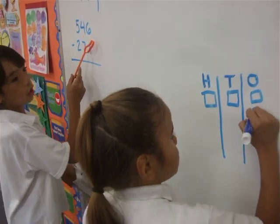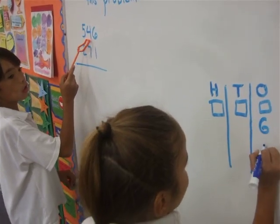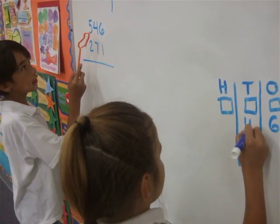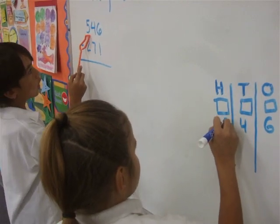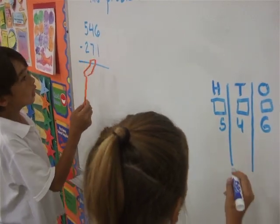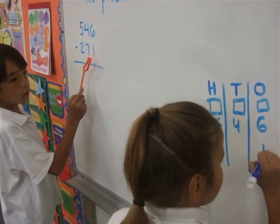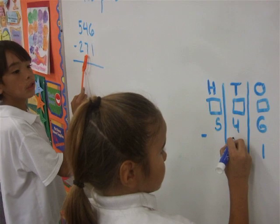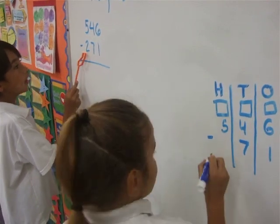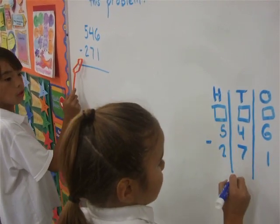The six goes on the ones, the four goes on the tens, the five goes on the hundreds. Minus, the one goes on the ones, the seven goes on the tens, the two goes on the hundreds.